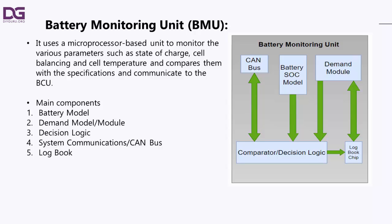The personality module includes provision for programming into the system all the custom requirements which may be specific to the customer's application. For example, the cell maker will recommend a temperature limit at which, for safety reasons, the battery must be automatically disconnected. However, the car manufacturer may set two lower limits: one at which forced cooling may be switched on, and another which lights up a warning light on the driver's instrument panel.